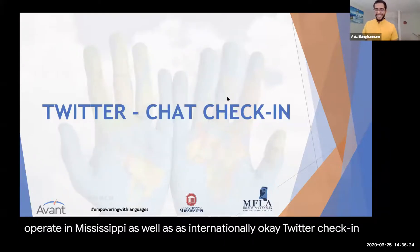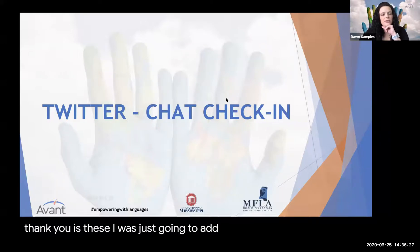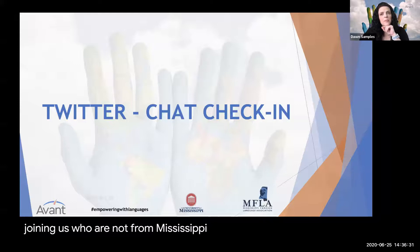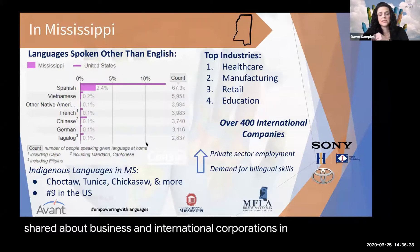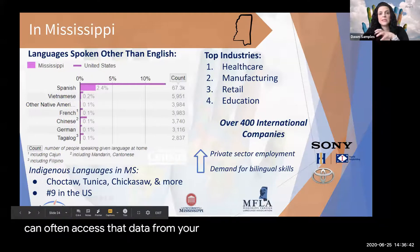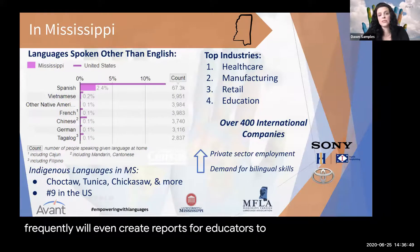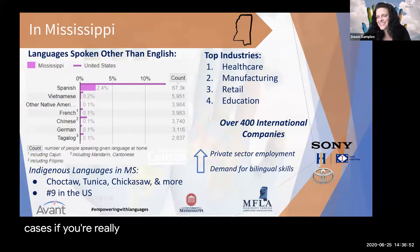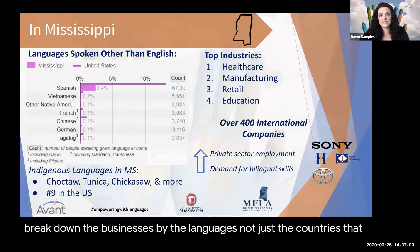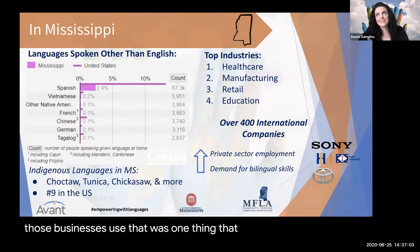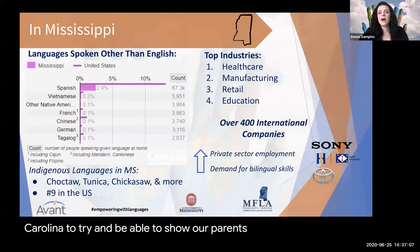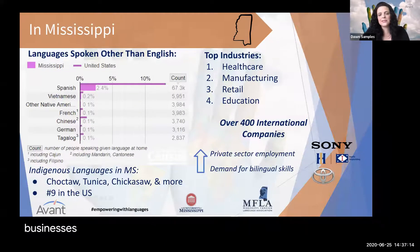For those not from Mississippi, Dawn noted that data about businesses and international corporations in your state is often available from your state chamber of commerce. They frequently create reports for educators, and in some cases will break down businesses by language, not just country. In South Carolina, her team used such data to show parents all the places in the state where specific languages were essential for business.